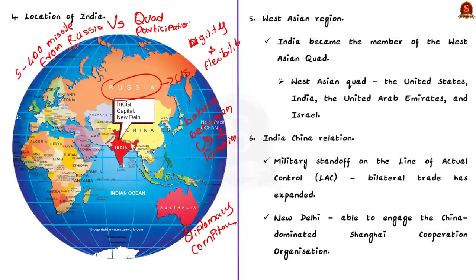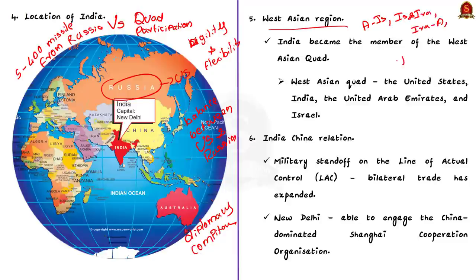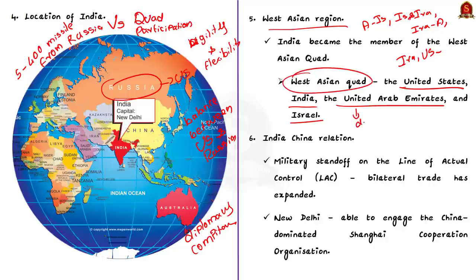Even in the broader Western Asian region, New Delhi's balancing acts have been remarkable. India is carefully making moves to balance between Arab States and Israel, Israel and Iran, Iran and the Gulf States, and Iran and the US. Recently, India became a member of the West Asian Quad, whose members include the United States, India, the United Arab Emirates and Israel. By bringing Israel and the Middle Eastern country UAE to the same forum, it is a diplomatic victory for India. However, the weak link is that India is not correctly balancing between Iran and the United States as it is balancing between Russia and the United States, so more efforts must be made in this regard.